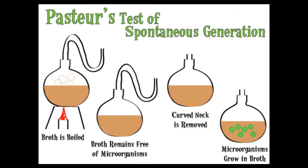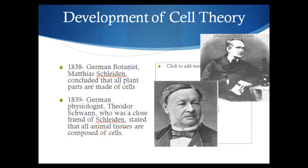The third, fourth, and fifth scientists we are going to talk about are the main people responsible for the development of cell theory. German botanist Matthias Schleiden concluded that all plant parts are made of cells. He was very close friends with a German physiologist named Theodor Schwann, and they both happened to work at the exact same German university. What they noticed was that whether they looked at plant parts or animal tissue, both were made of cells. So these two scientists are really the main people responsible for stating that both plants and animals are composed of cells.